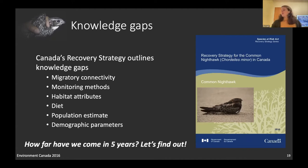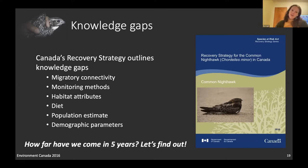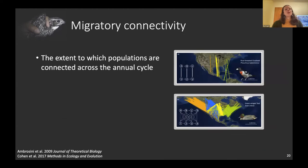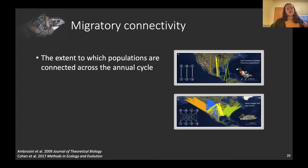Let's look at how far we've come in the last five or six years, because we've actually learned a lot. The first topic is migratory connectivity, which is sometimes a counterintuitive concept but is a really valuable tool for understanding the conservation of migratory species.